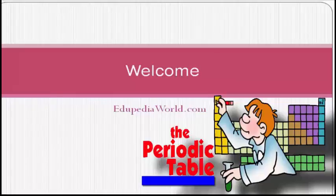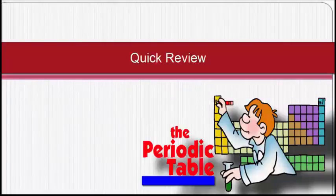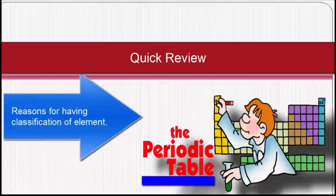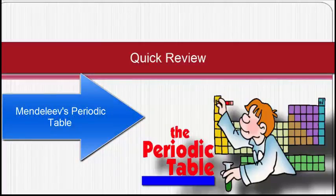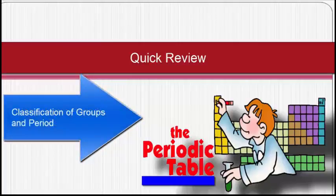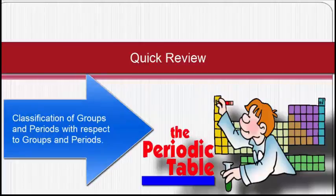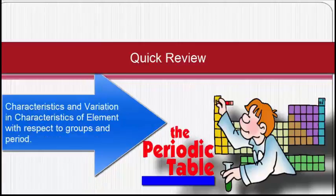Hello friends and welcome to aripediaworld.com, your destination for online education. So far we started the discussion on classification of elements in the periodic table. We learnt the reasons for classification, then moved to Dobereiner's triads, Newlands' octaves, and Mendeleev's contribution towards the periodic table. Finally, we discussed the modern periodic law, the long form of the modern periodic table, and the characteristics and variation of element properties with respect to groups and periods.